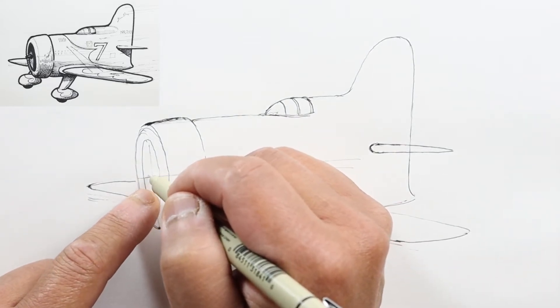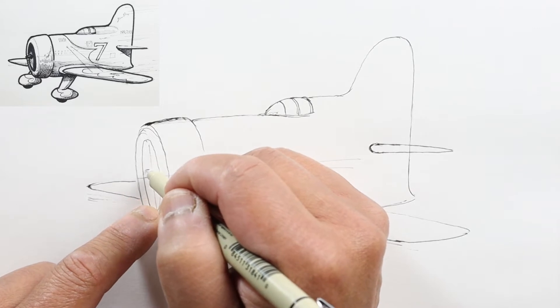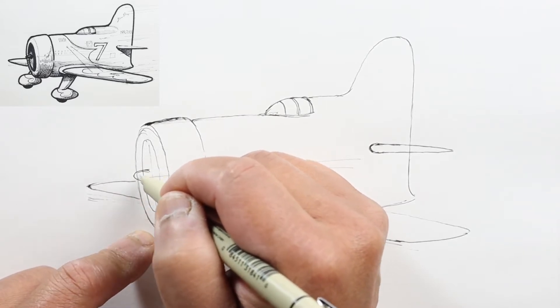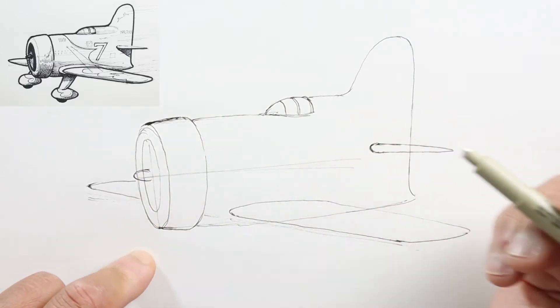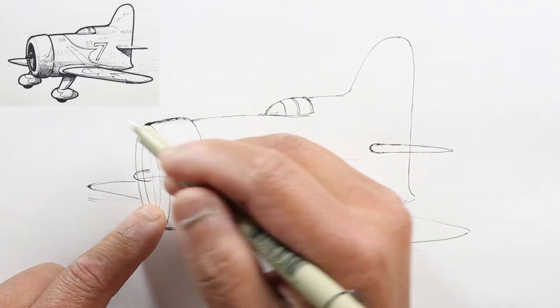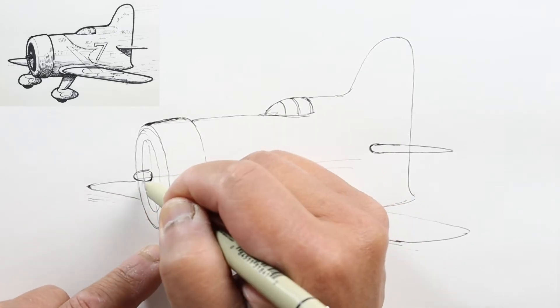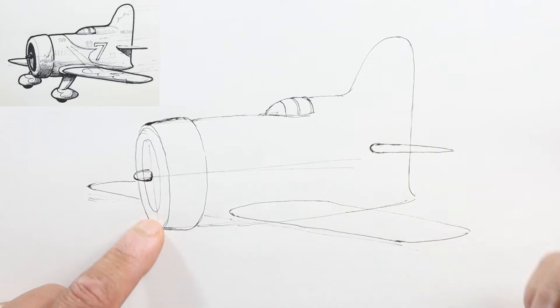In the center of this front cone will be the center of the propeller. We're going to assume you can't see the propeller because it's spinning, so we're just going to see the inside cone and curve it in like that.